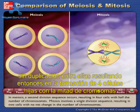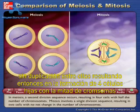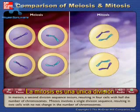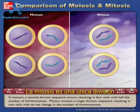Mitosis involves a single division sequence, resulting in two cells with no net change in the number of chromosomes.